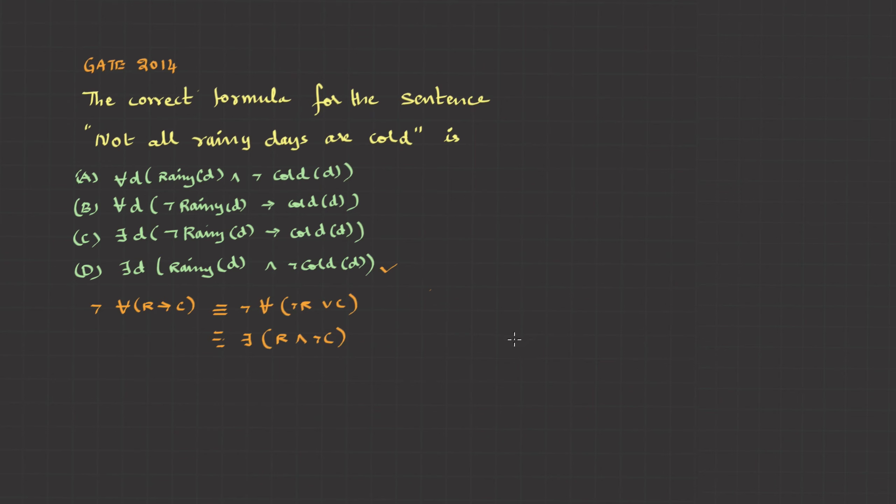If you are not able to get the idea of which law is applicable, then you can test from options. Just write the sentences for each option. This is: every day it rains and it's not cold. Every day, if it does not rain, then it is cold.